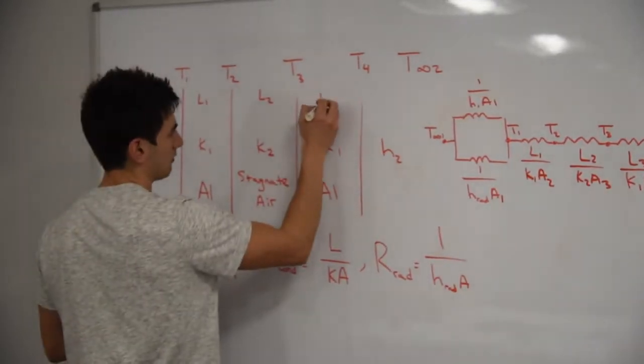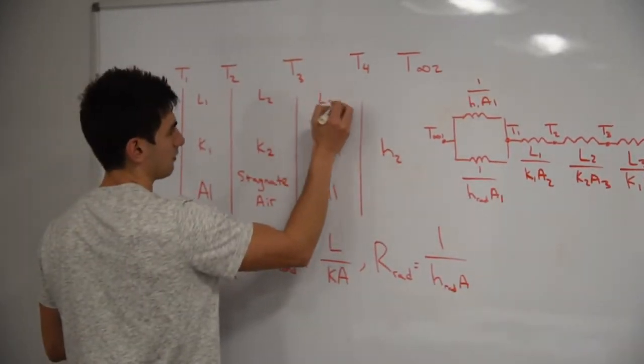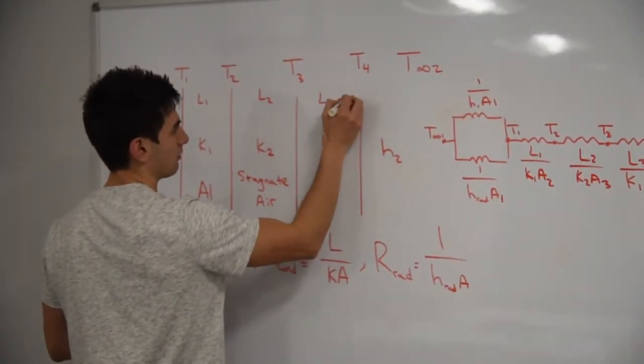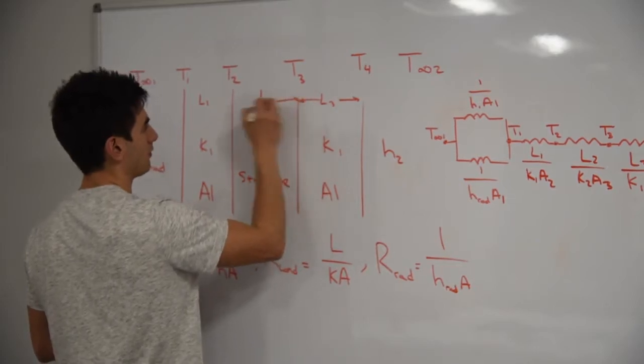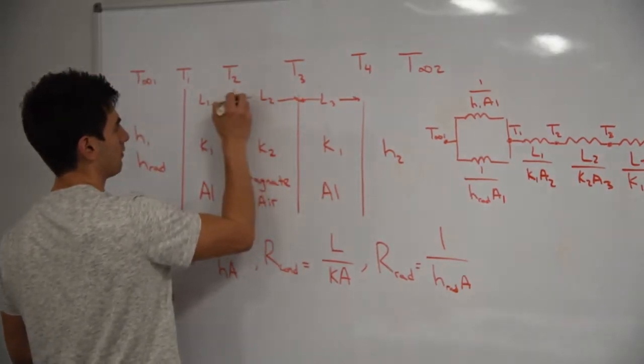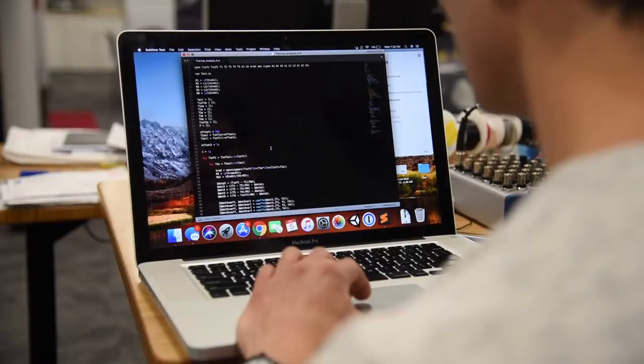Drawing out a thermal resistor network that represents a system is a good way of simplifying the problem and solving for temperatures at various locations throughout the product. In some cases, like ours, you wind up with more unknowns than you can solve for using a system of algebraic equations.